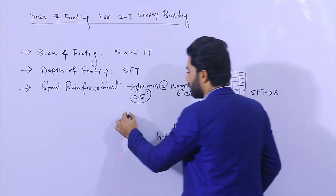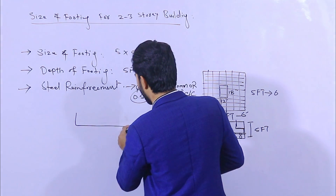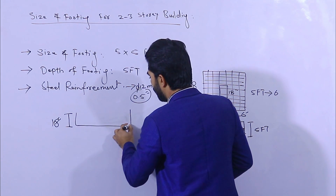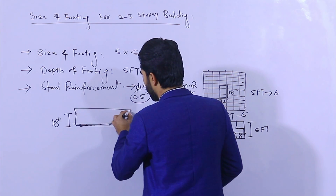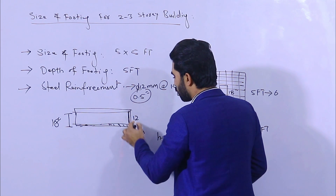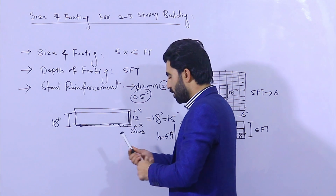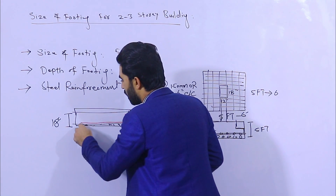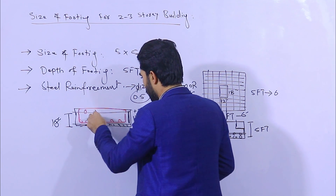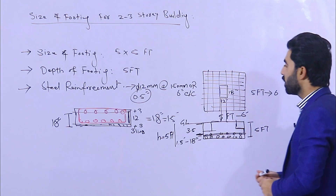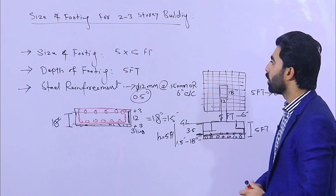The bed level should not be less than 18 inches. At the bottom, three inches of concrete cover, and at the top also three inches of concrete cover. So the steel zone is 12 inches — 12 plus 3 plus 3 equals 18 inches, or 1.5 feet. We will provide steel rods at both bottom and top layers. The size should be 12 mm and spacing should be six by six inches, or 150 mm by 150 mm.